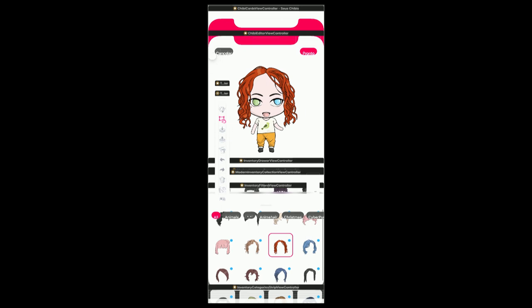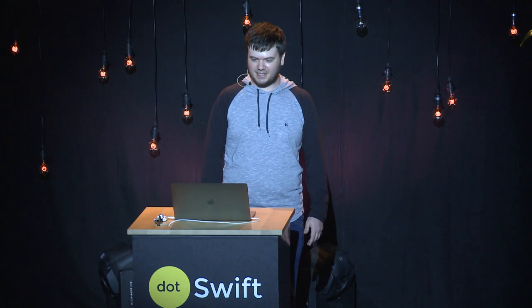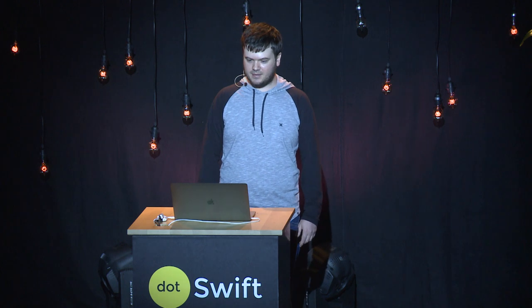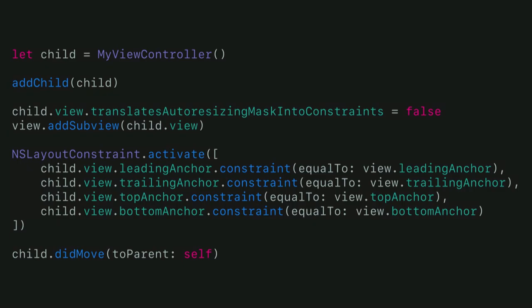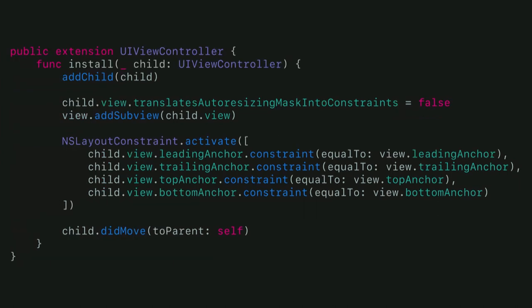Let's start with containers. How many view controllers do you think are on this screen? I actually have eight. Many developers feel like they need one view controller per screen, but you can use child view controllers to make your app more composable and decoupled — and it's not difficult. You add a view controller as your child, set up some constraints to fill the parent's screen, and that's it. You can even make it easier with an extension on UIViewController.